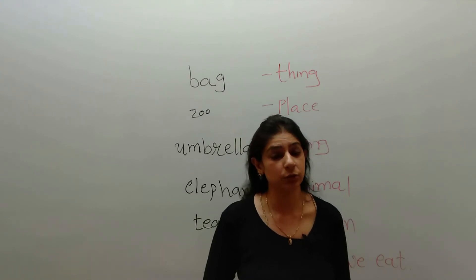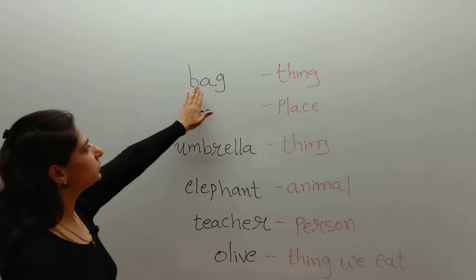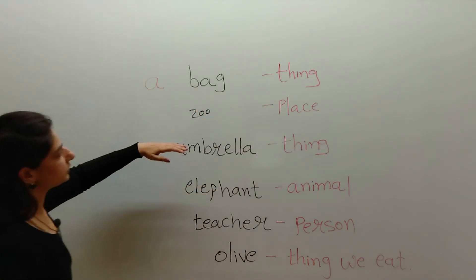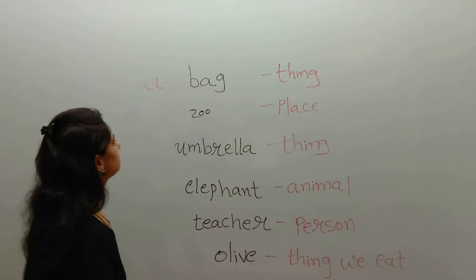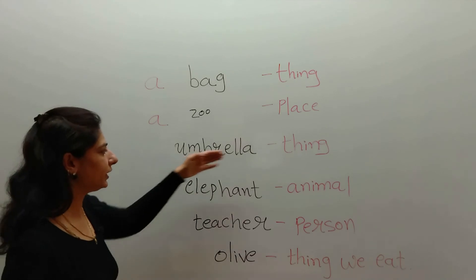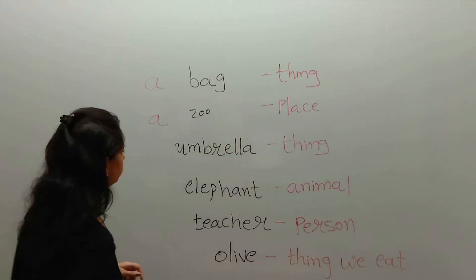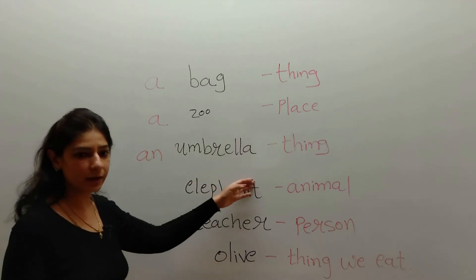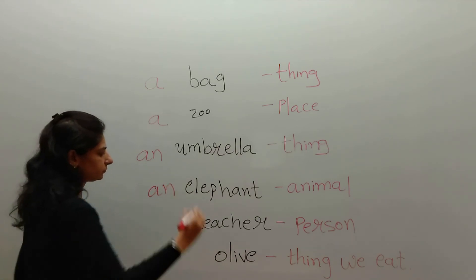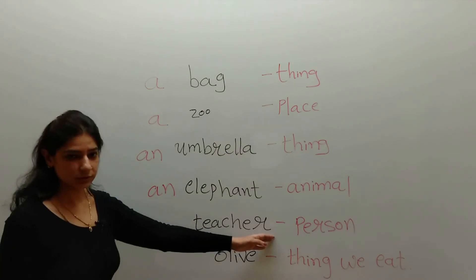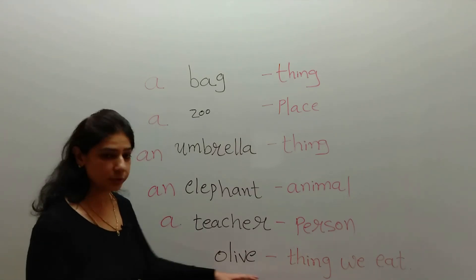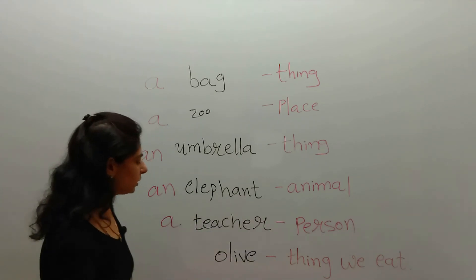Let's look at the board for some extra practice. 'Bag' starts with a B sound — a consonant — so: a bag. 'Zoo' starts with a Z sound — a consonant — so: a zoo. 'Umbrella' starts with a U sound — a vowel — so: an umbrella. 'Elephant' is an animal starting with an E sound — a vowel — so: an elephant. 'Teacher' is a person starting with a T sound — a consonant — so: a teacher. 'Olive' starts with an O sound — a vowel — so: an olive.